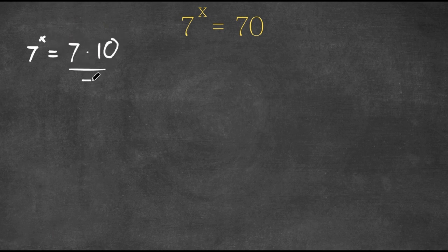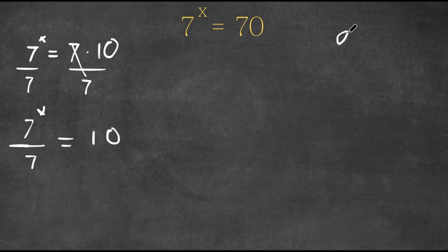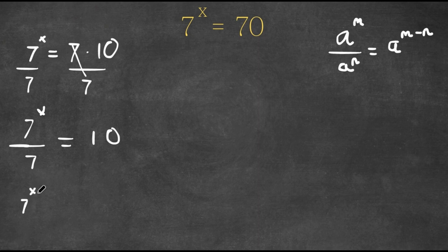Now I'm going to divide by seven on both sides. So now we have seven to the power of x over seven, and these two cancel out, so it's simply just 10. Now if we have something in the form a to the power of m over a to the power of n, this is simply equal to a to the power of m minus n. So seven to the power of x over seven would be seven to the power of x minus one, and now this is equal to 10.